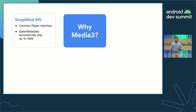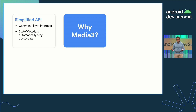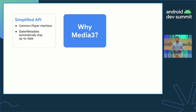Even compared to previous iterations of the media APIs, Media 3 offers a simplified API for you to use. For example, there's a single common player interface that's used across many key components, such as Media Session and Media Controller, which makes it easier to follow exactly what's going on when you're trying to handle a play command. Important information, such as the state of playback and the metadata of the currently playing media item, are automatically kept up to date, so that all of your clients remain in sync.